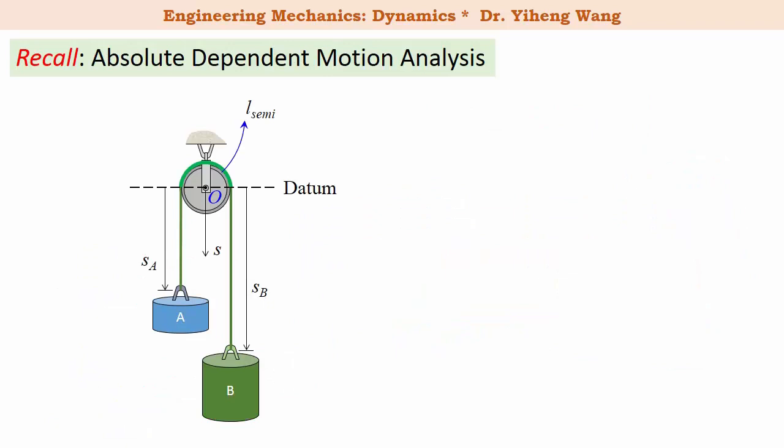Before that, let's quickly review the absolute dependent motion analysis that we learned in particle kinematics. If you recall, there are two key steps. We need to set up position variables s along the direction of motion from a fixed point or a fixed datum line.